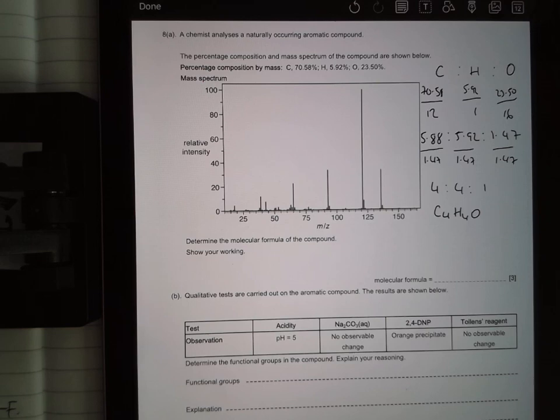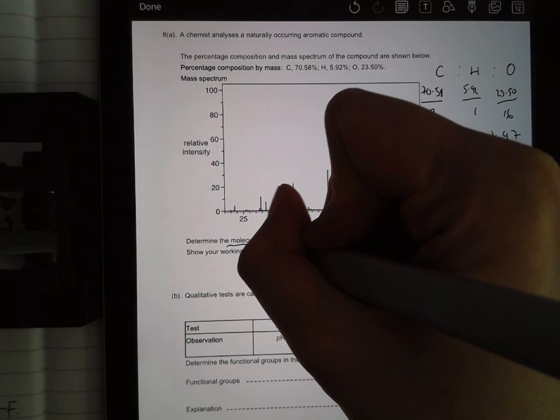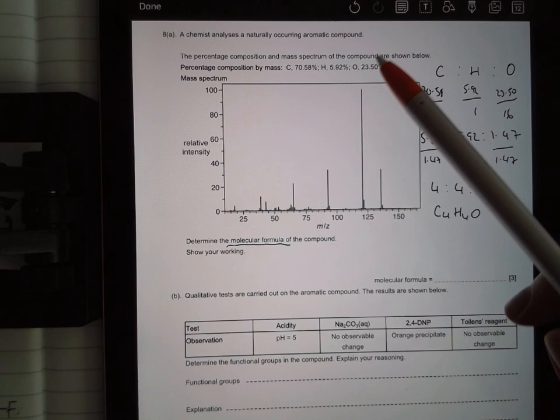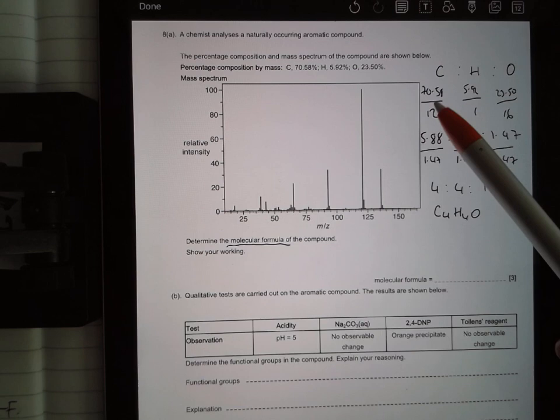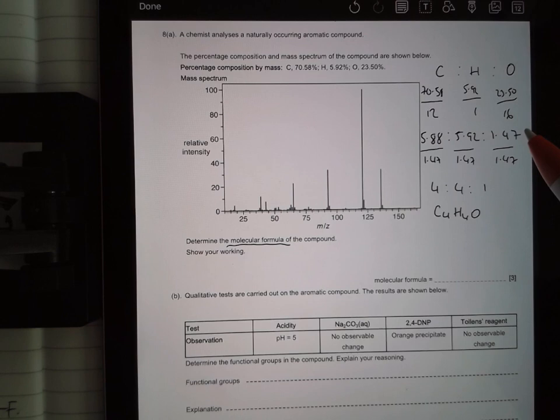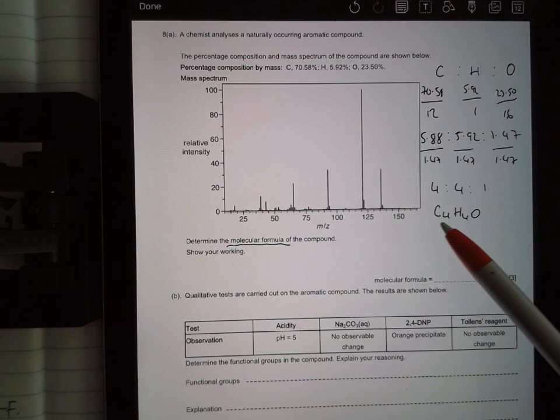In question 8, you're asked to determine the molecular formula of the compound. And this is important. You are asked for molecular formula, not just the empirical formula. So they give you this composition by mass, you should hopefully be familiar with this, you need to use this data to work out the empirical formula. So I take the percentage of each and divide by the formula mass. So carbon is 70.58 divided by 12. I do that for each. I simplify this ratio by dividing by the smallest number, and I end up with the ratio of 4 to 4 to 1, which is C4H4O. This is your empirical formula.